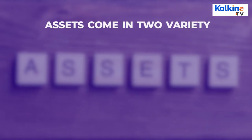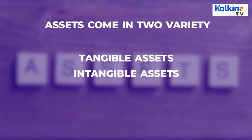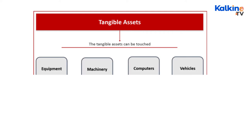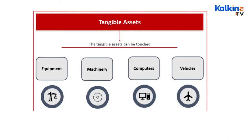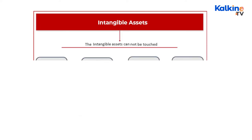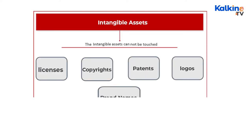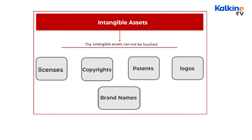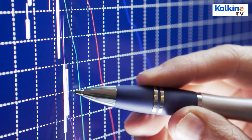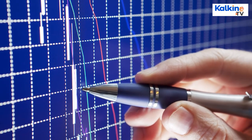Assets come in two varieties: tangible and intangible assets. As the name does suggest, tangible assets can be touched, such as equipment, machinery, vehicles, computers, etc. Intangible assets cannot be touched and include assets like licences, copyrights, patents, brand names and logos. Amortisation of assets is an accounting method similar to depreciation used to expense intangible assets.